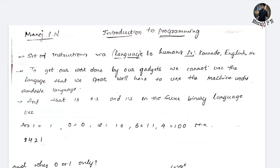You can use different languages to communicate — like English. Humans communicate using language. In the same way, you are using a machine — a laptop, mobile phone, or computer — and you can communicate with them using a language. That language is binary language, which is nothing but zeros and ones.